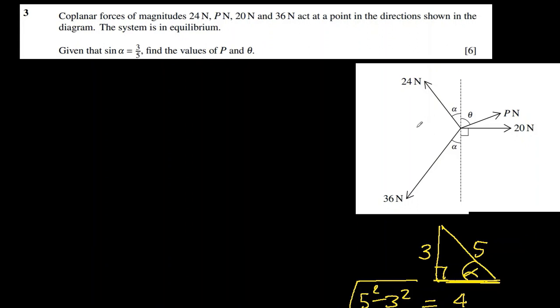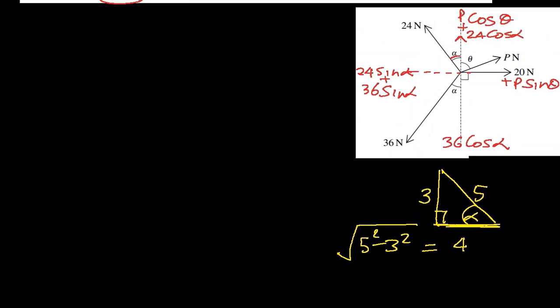Now the components in x direction and y direction will be written. The component of 24N in this direction will be 24 cos alpha because alpha is with the vertical component. Plus we'll have the vertical component of P, which is P cos theta. 20N is already here. Here will be P sin theta. Here will be 24 sin alpha. 36N is also there with the same alpha angle. So 36 cos alpha and here 36 sin alpha.